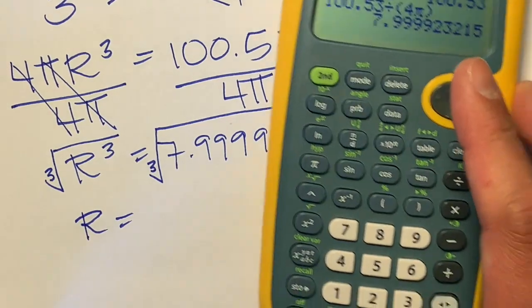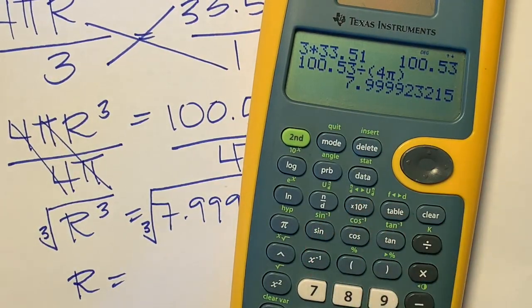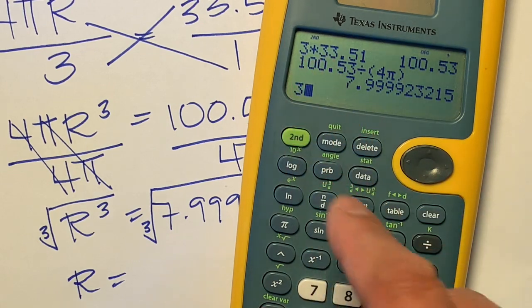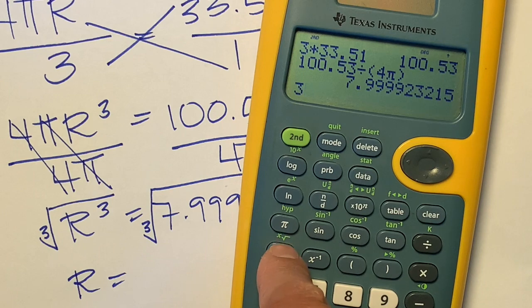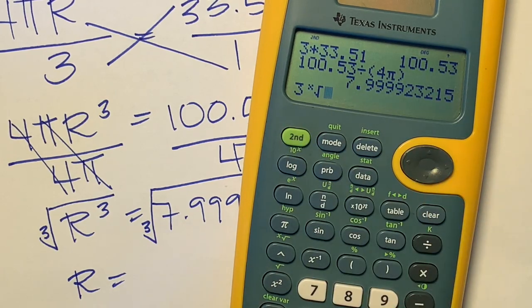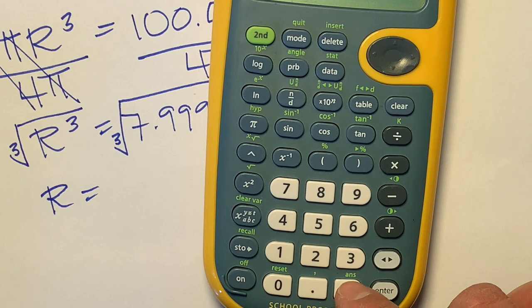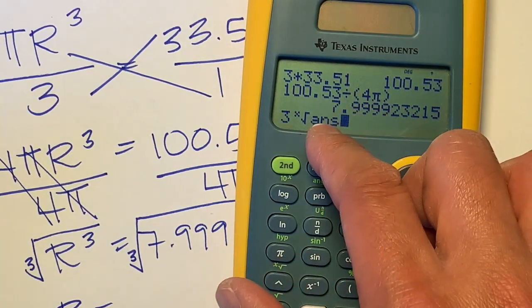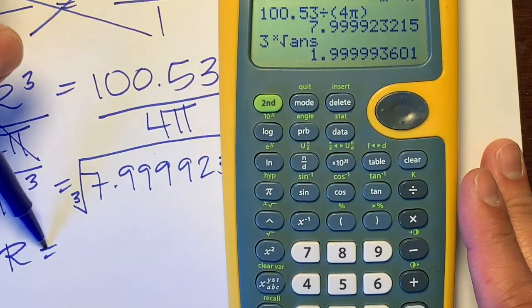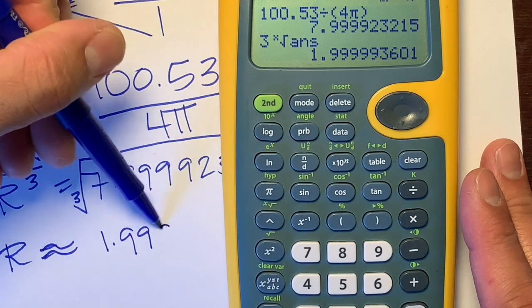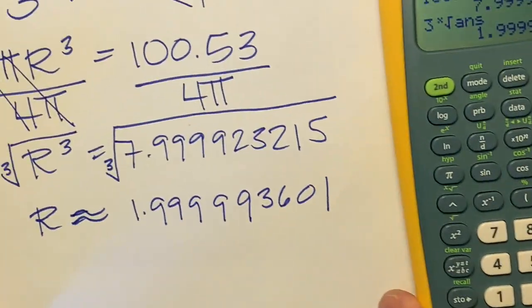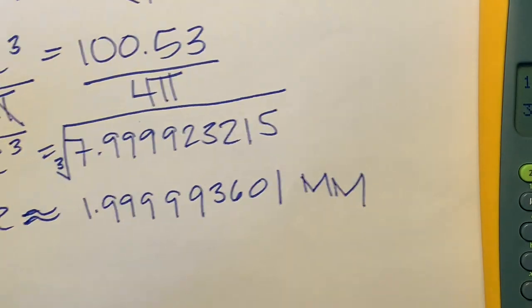So for the radius, we're going to type in a 3, press the second function and get this root symbol with an x. This will give us the cube root. Then press second and the answer button. That takes this value and puts it right here for us. Press enter and our answer would be approximately 1.999999360. So there you go, there's your radius of the sphere.